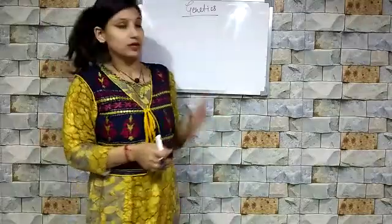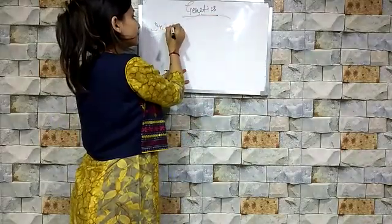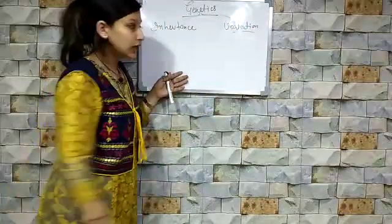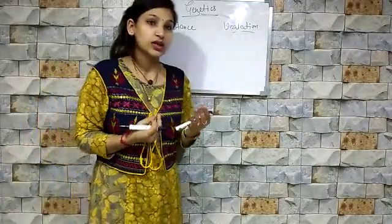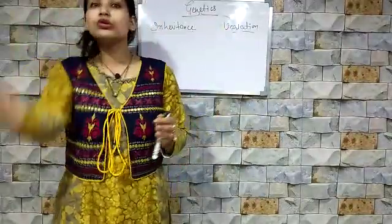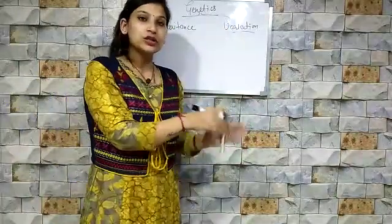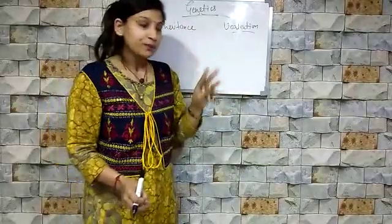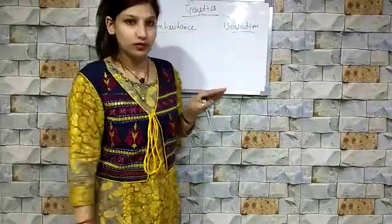We will start with two names: inheritance and variation. Inheritance refers to how traits are sent from one generation to another — how parents pass characteristics to their children. The process of transmission of traits is what we call inheritance, and we use the word 'heredity' for it.